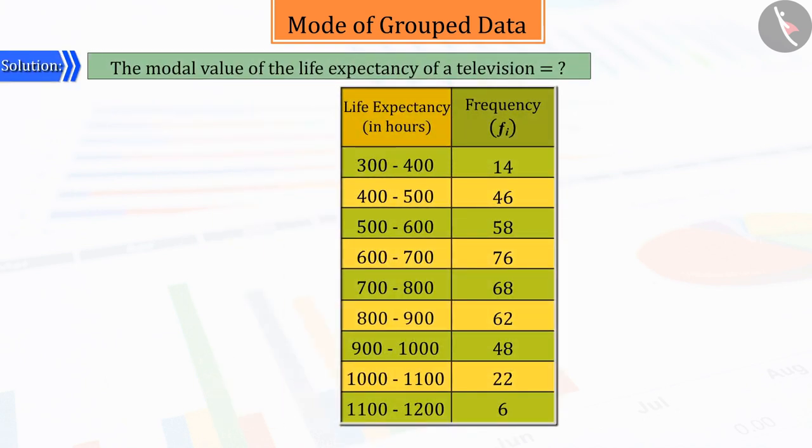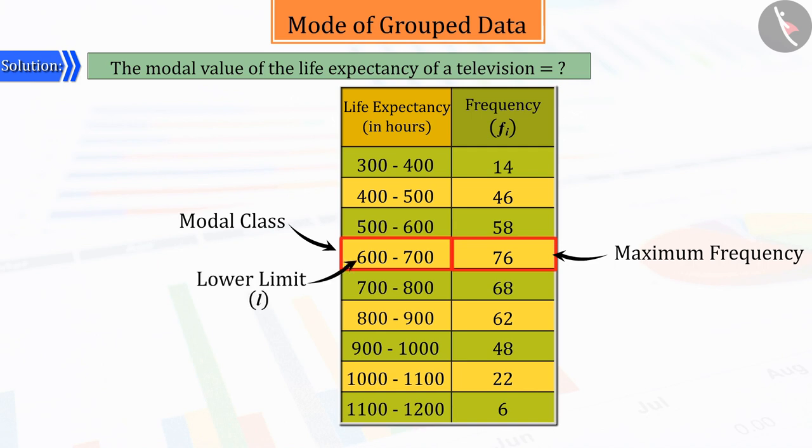We know that in order to find the mode, first of all, we must select the highest frequency. From the given frequency table, you can tell that 76 is the highest frequency here. So, the modal class will be 600 to 700, where 600 is the lower limit of the modal class that is L.